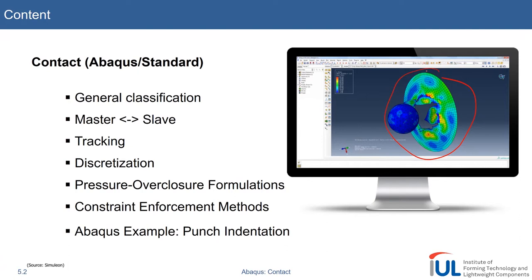In Abaqus Standard, you have different general classes of contact definitions. The master-slave definition is very important and can influence the result of your simulation significantly. We'll also talk about tracking and discretization schemes, especially discretization can be a source of error, especially in terms of convergence.